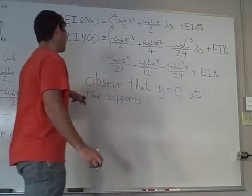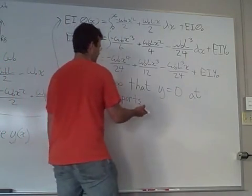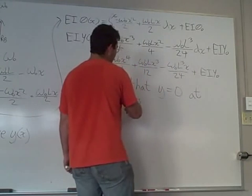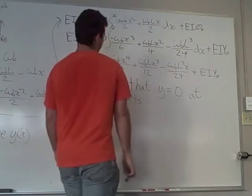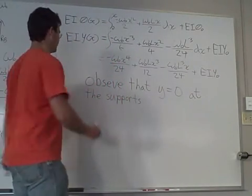The beam hasn't deflected anywhere at the support, so the supports are rigid and they're not moving. And so since Y equals zero at the supports, we can let X equals zero.